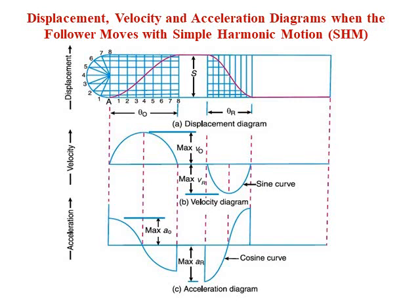As you can see on the screen, we have the displacement, velocity, and acceleration diagram when the follower moves with simple harmonic motion. Looking at the velocity diagram, since the follower moves with simple harmonic motion, the velocity diagram is a sine curve and the acceleration diagram is a cosine curve. The velocity is zero at the beginning and end of a stroke and increases gradually to a maximum at mid-stroke, shown by the dotted line labeled V₀ (out stroke) and Vᵣ (return stroke).